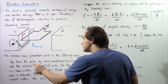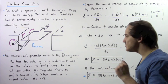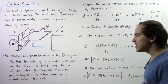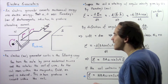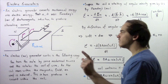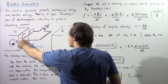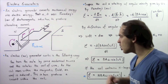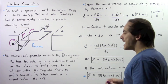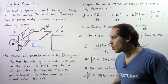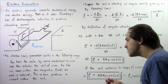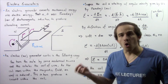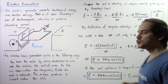An electric generator, also known as an AC generator, works in the following way: you turn the axle by some mechanical means, and this rotates the coil of wire. Note that this coil of wire can consist of many coils of wire. As the coil moves within the magnetic field, an EMF is induced — this is known as Motional EMF. This in turn produces a current inside the coil, and this electric current is an alternating electric current.